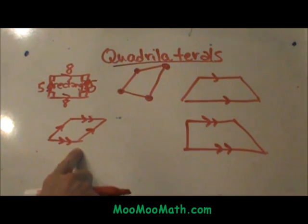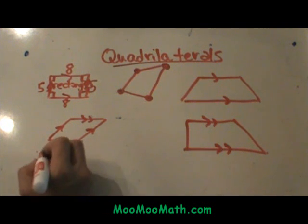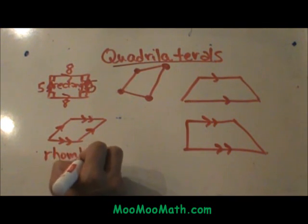This one down here, these two sides are parallel because they are marked with arrows. These two sides are parallel because they are marked with arrows. That one is a rhombus. I always call that a squished square.